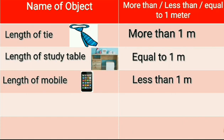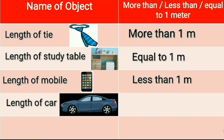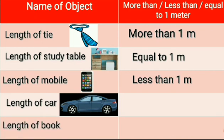Similarly, take a rough idea of what the length of a car would be — will it be more than, less than, or equal to 1 metre? Think and complete it, or take your metre strip and try to measure it. If it is longer than your metre strip, then the length of the car is more, and if it is less, then it will be less. Then find the length of your book. Try to find it — is it more, less, or equal to 1 metre? Complete this table in your notebook.